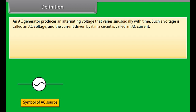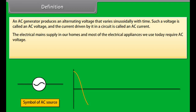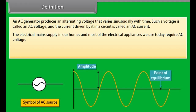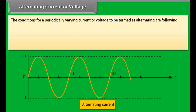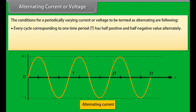Define inductive reactance and capacitive reactance. Definition: an A.C. generator produces an alternating voltage that varies sinusoidally with time. Such a voltage is called an A.C. voltage, and the current driven by it in a circuit is called an A.C. current. The electrical main supply in our homes and most electrical appliances require A.C. voltage. The main reason for preferring A.C. voltage is that it can be changed conveniently and efficiently to either higher or lower amplitudes by means of a transformer.